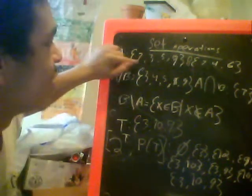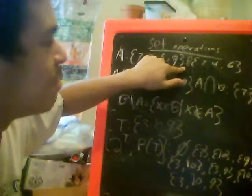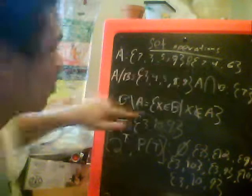Let's suppose we have the set 7, 3, 5, and 9 for A, and in set B we have 7, 4, and 6. Those would be the elements.